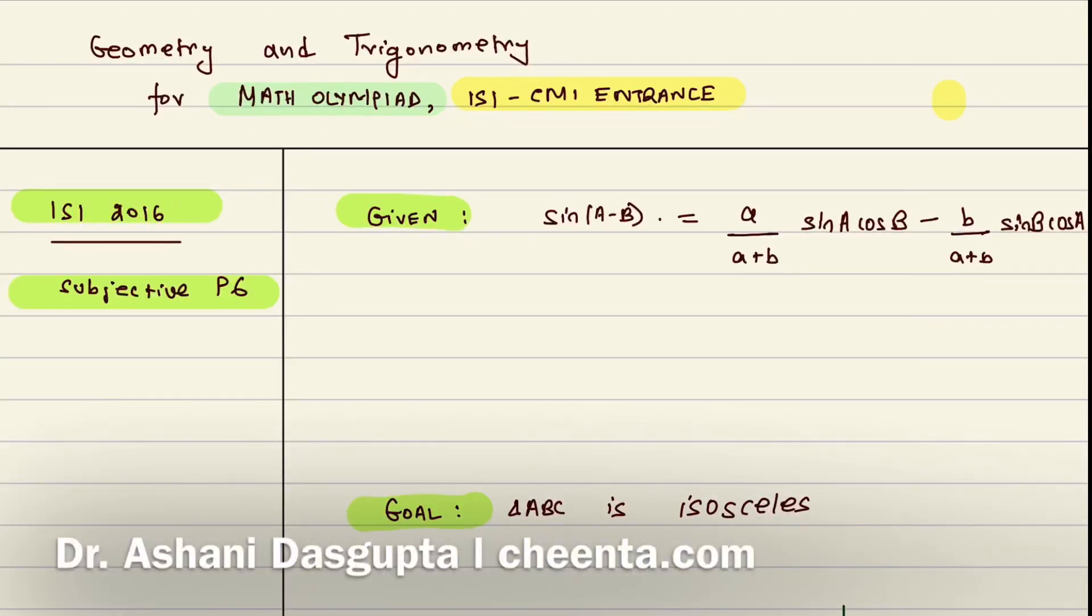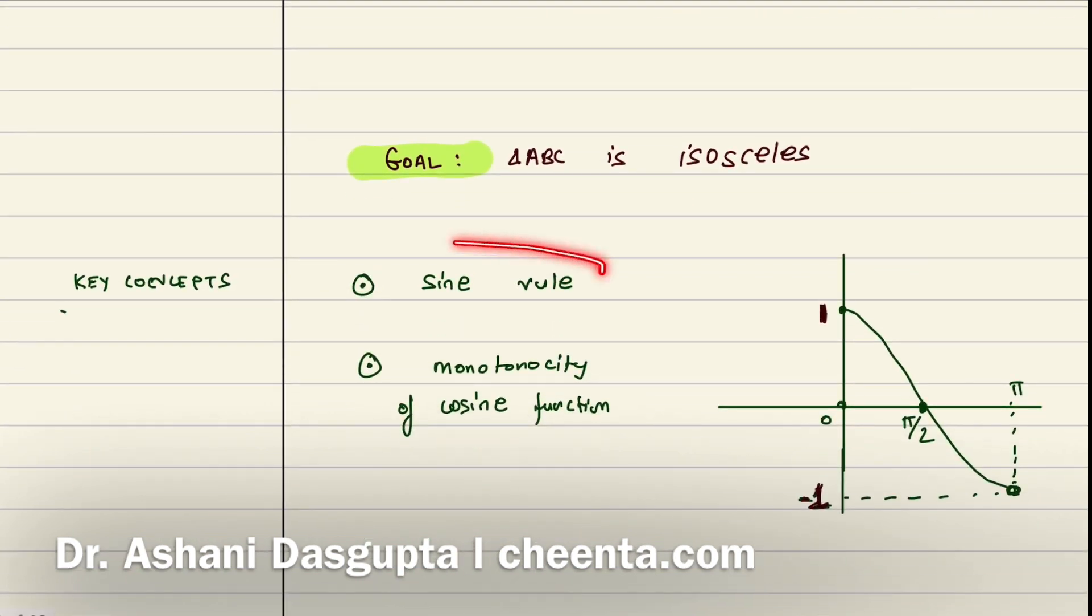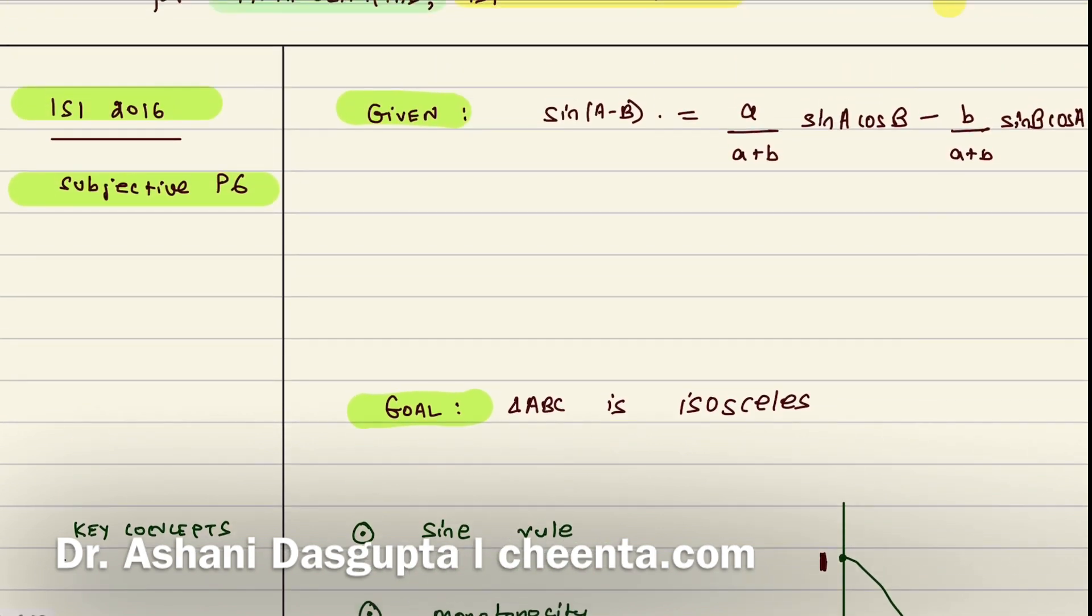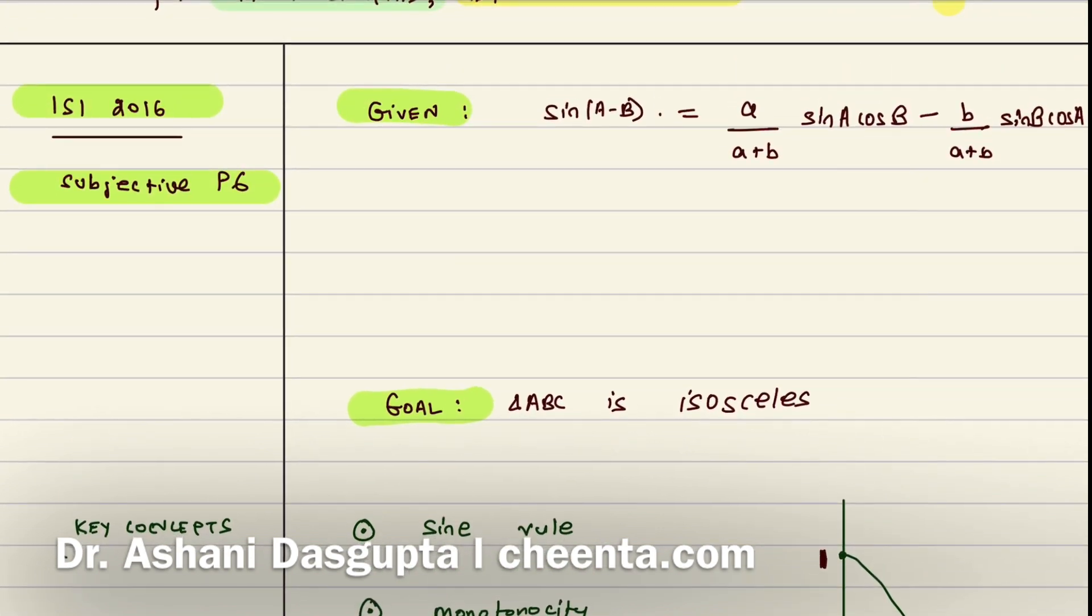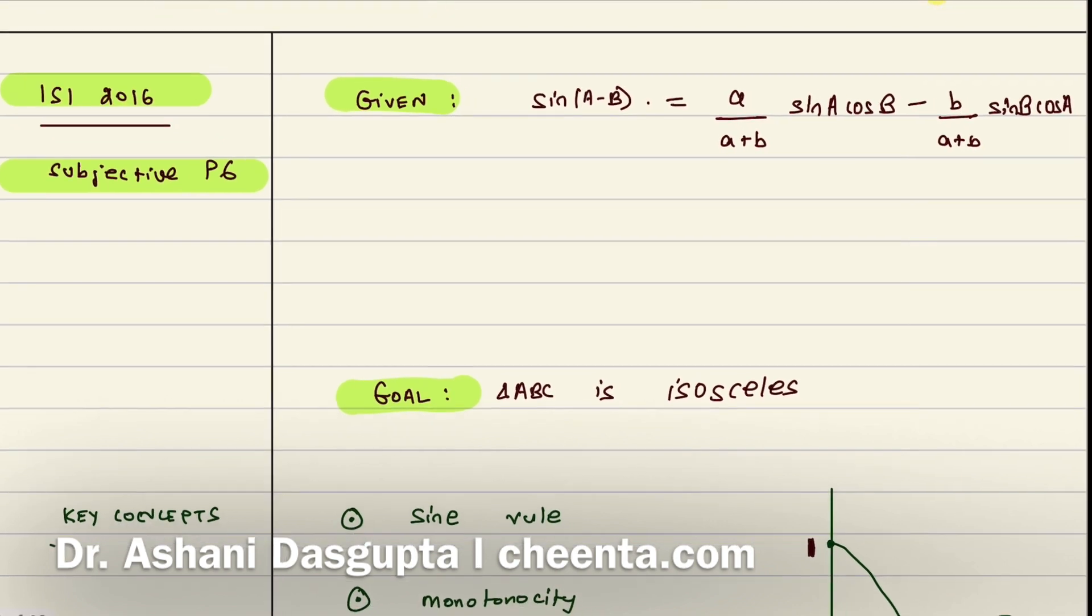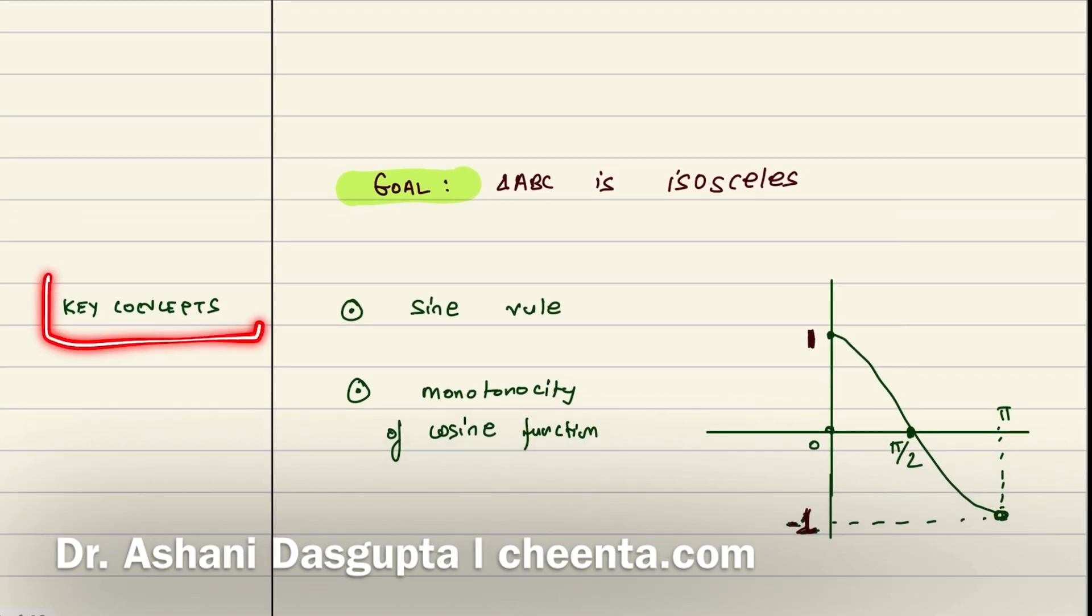Hello everyone, today we will be learning something from geometry and trigonometry. We will learn certain key concepts, for example sine rule and how to use monotonicity of cosine function. But before we do that, let's start with a problem from ISI entrance 2016, a subjective problem number six. Using this problem we will learn all of these key concepts.